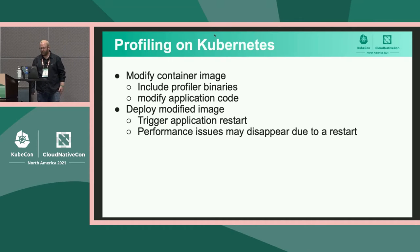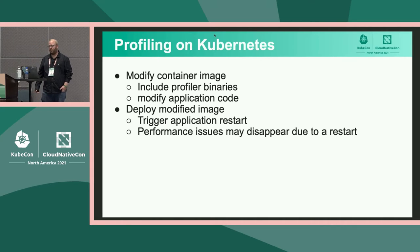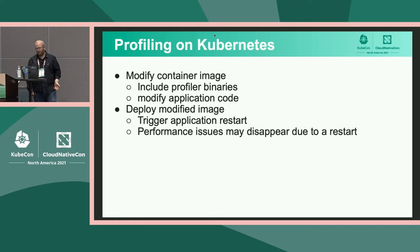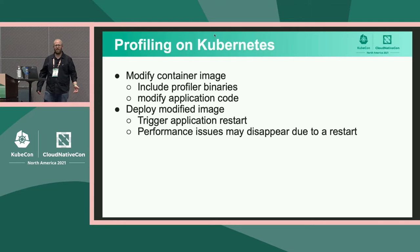If we want to add a profiler to our container image, we need to modify the image itself, include the relevant profiler binary, and modify the application code. After all those changes, we have to build the modified image, push it to a registry, and deploy to our cluster. This deployment may trigger application restarts, and when you're dealing with a performance issue you don't want to restart — because some issues like memory leaks may disappear on restart.